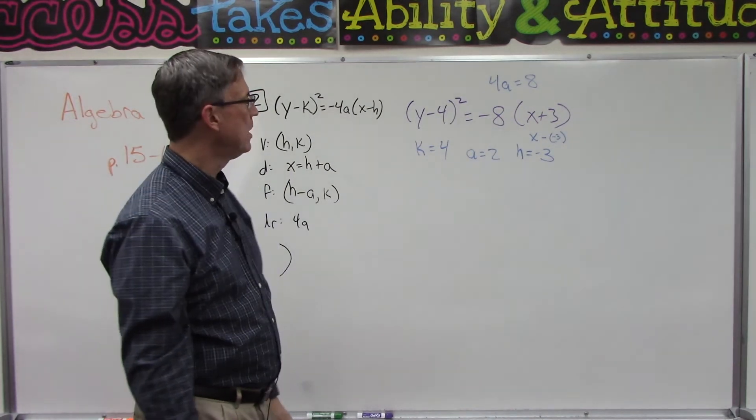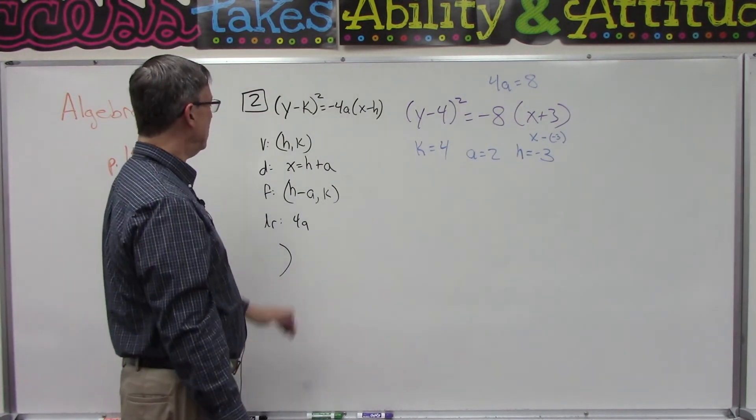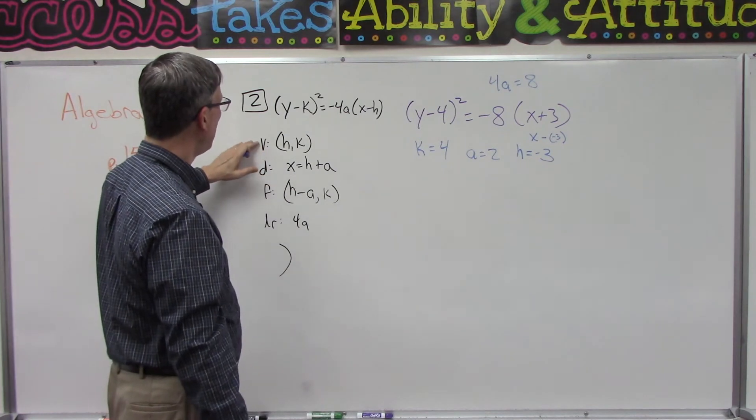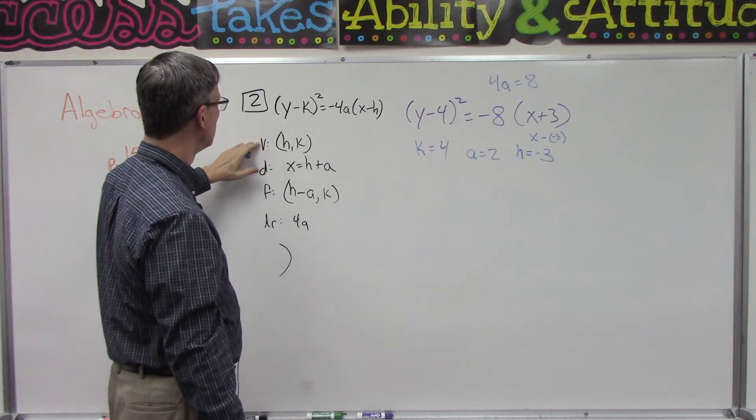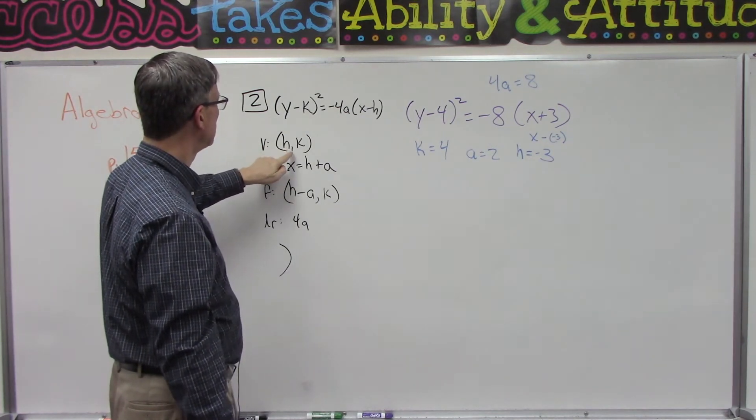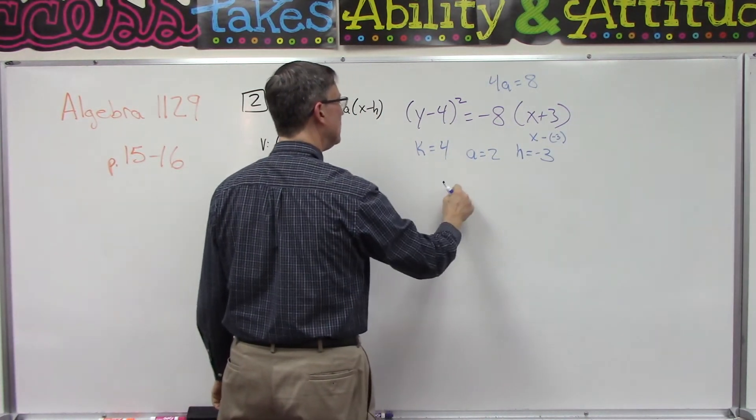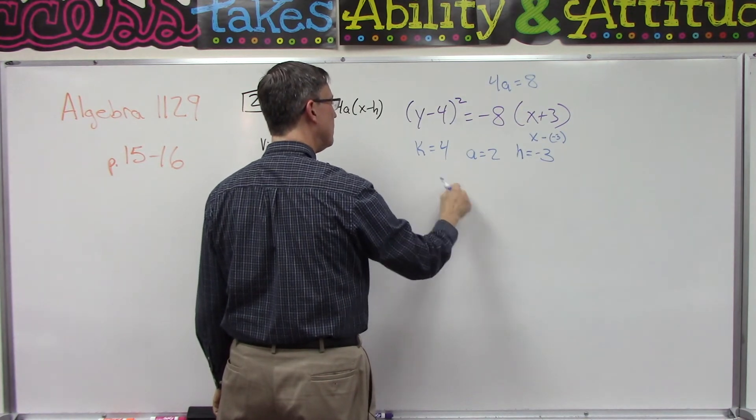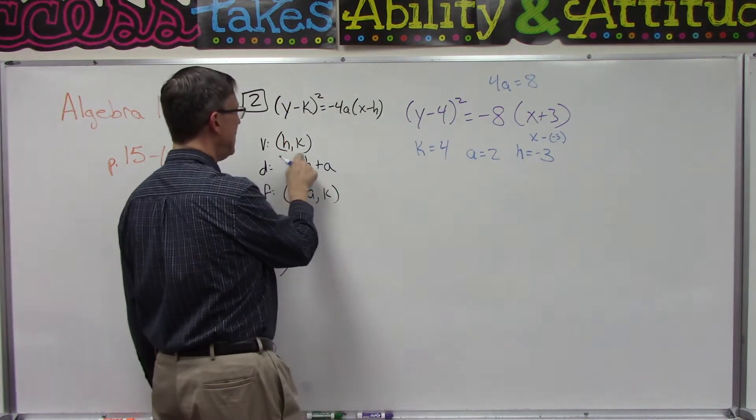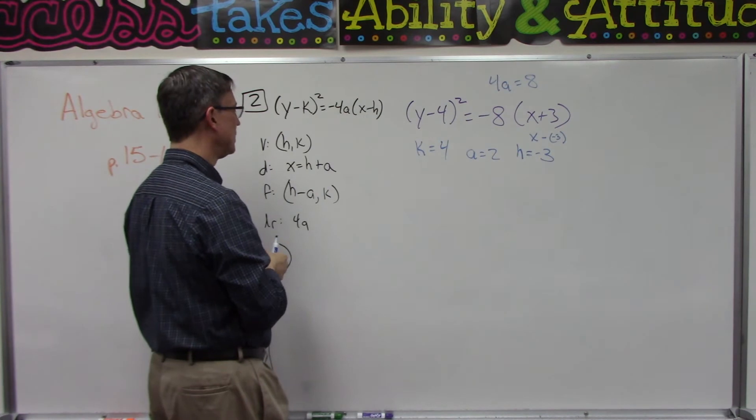And now let's look at our patterns here. I'm not going to write this down for you. This first one's easy: the vertex is H comma K. So we're gonna first take the H value comma the K value, put parentheses around it, and that will be the vertex.